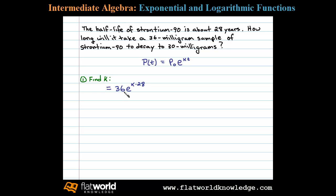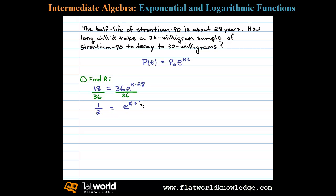But we know that in 28 years, when t is 28, the initial amount will decay to half — that's what half-life means — so half of 36 will be 18 milligrams. Substituting in the half-life information, the only variable left is k. Let's begin by isolating the exponential expression by dividing both sides by 36. 18 divided by 36 is one-half, equal to e to the k times 28 power.